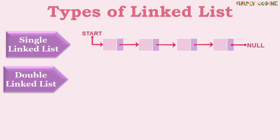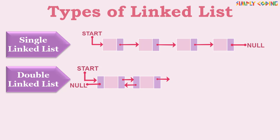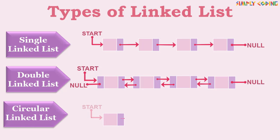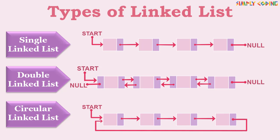In a double linked list, each node has two link fields, one forward and one backward, so you can traverse in forward as well as backward direction. A circular linked list is like a single linked list but the last item contains a link to the first element as next. Similarly, you can have a circular double linked list as well.